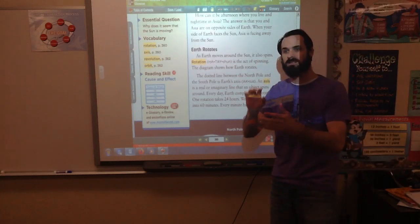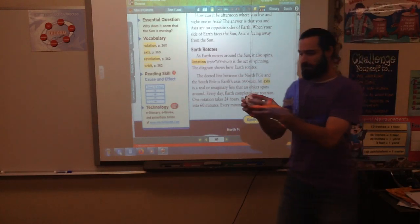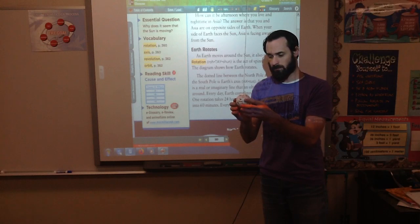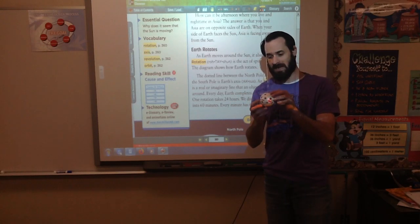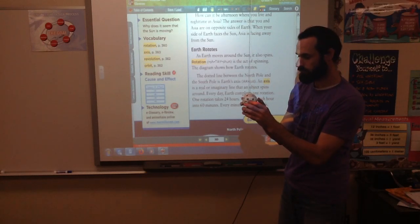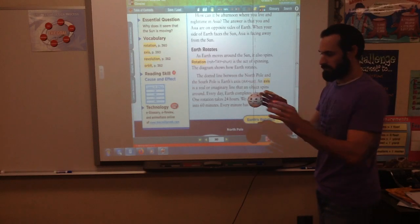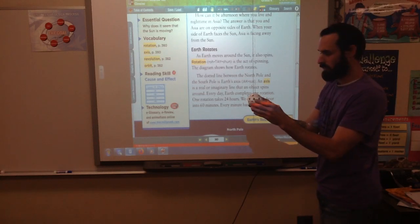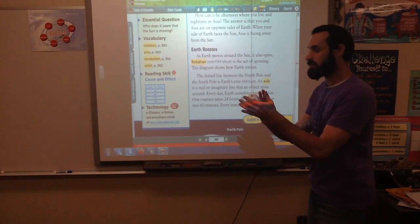So rotation is spinning. Now to demonstrate that, I've grabbed a wiffle ball that I had at home. And if you look, I've made little red dashes all the way around, but I've left some white in between them. And this is supposed to represent like earth. It's spinning a little bit right now, but what rotation is, is if I were to go like this.